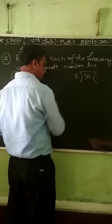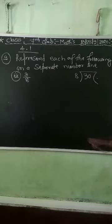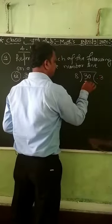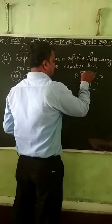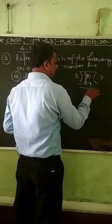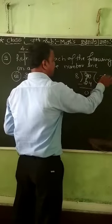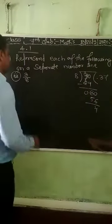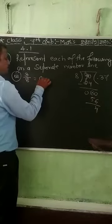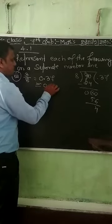Continuing the long division for 3/8: 8 times 3 is 24, bring down to get 60; 8 times 7 is 56; remainder 40 gives 8 times 5 is 40. So 3 divided by 8 equals 0.375, which is approximately equal to 0.4.